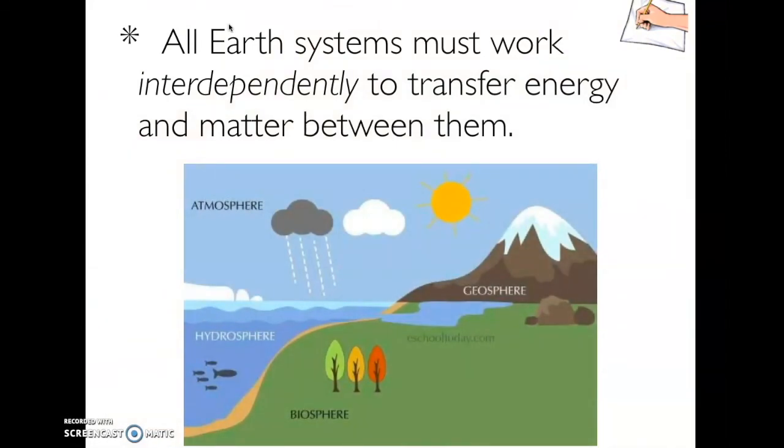Here is an image of four spheres interacting together. We see our air sphere, the atmosphere, as well as the ocean, which is our hydrosphere. We also see the biosphere in the fish and the trees and the grass, and we see the geosphere, which are the different landforms, which has the mountain in the background.